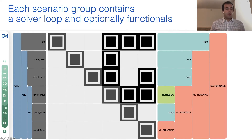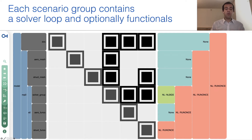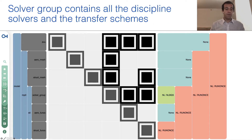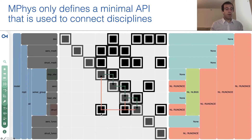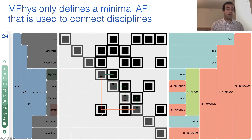Each scenario primarily contains two groups: the solver group and the functional groups. The solver group contains the main nonlinear solver, and once we iterate and converge this solver group, we run the functional group once using the converged state. Inside each solver group, we have all the components required for all the disciplines and the coupling schemes. Here you can see the feedback coupling between aerodynamics and structures — the displacement transfer group updates the aerodynamic surface nodes, we run the aerodynamic analysis, get the surface loads, which are fed into the structural solver. The displacements from the structural solver feed back to the displacement transfer scheme, and we iterate until we converge the state.